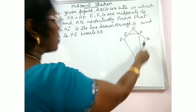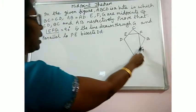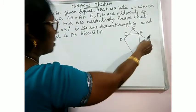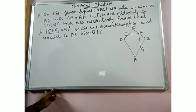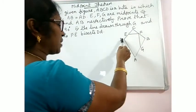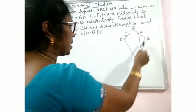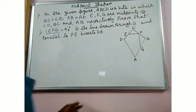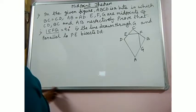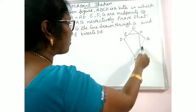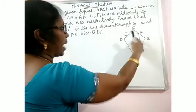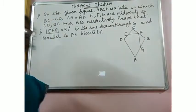E, F, and G are the midpoints of CD, BC, and AB respectively. E is the midpoint of CD, F is the midpoint of BC, G is the midpoint of AB. If it is so, we have to prove that angle EFG is 90 degrees.